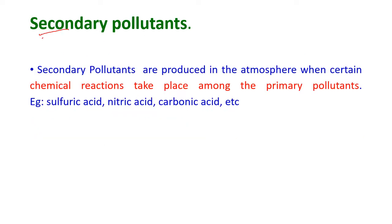Secondary pollutants are produced in the atmosphere when certain chemical reactions take place among the primary pollutants. Examples include the production of sulfuric acid, nitric acid, and carbonic acid.